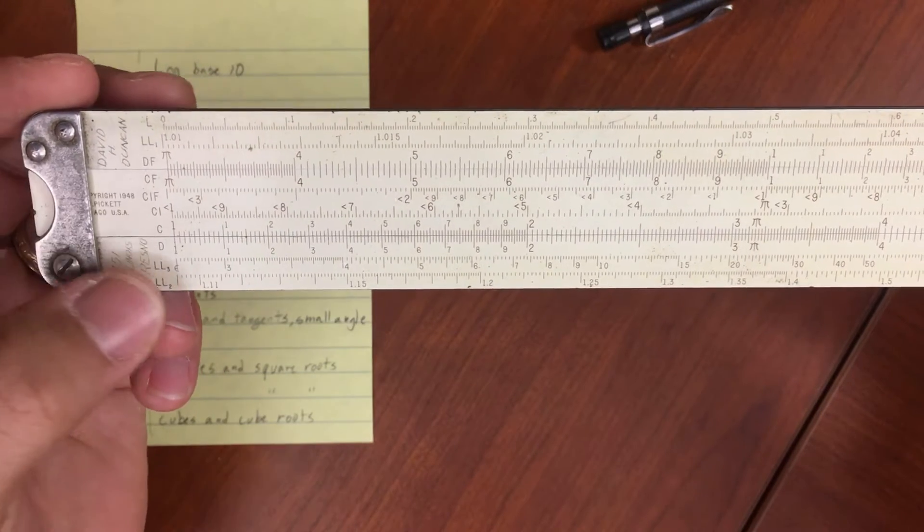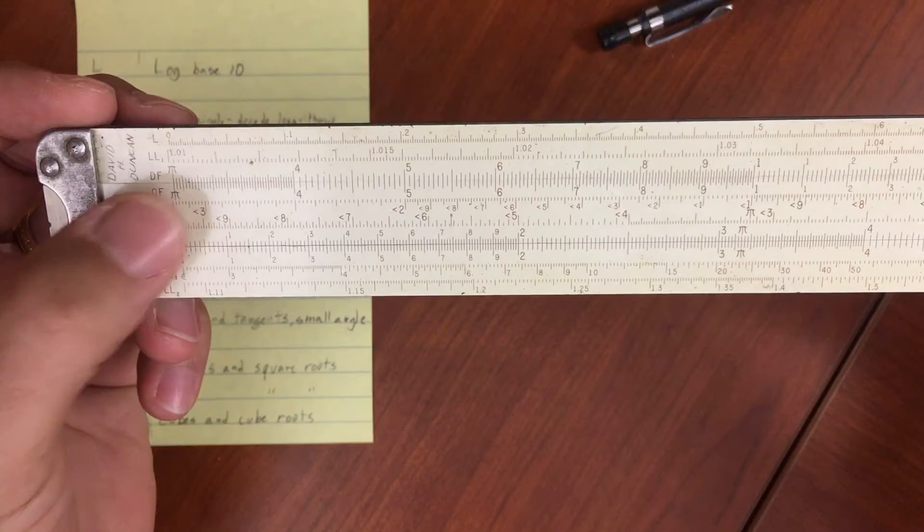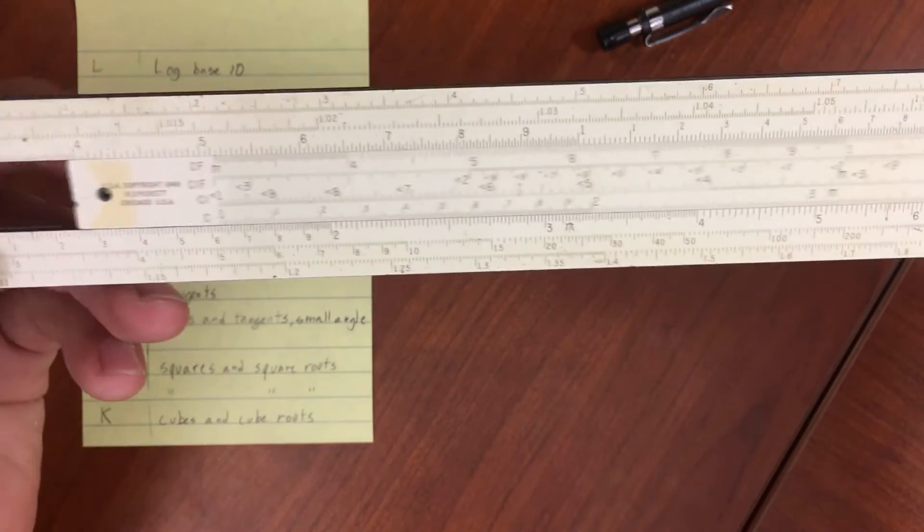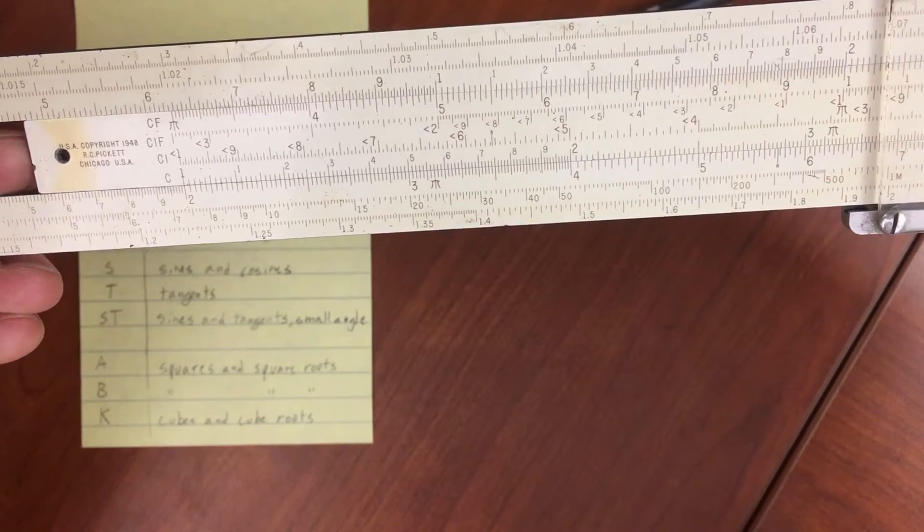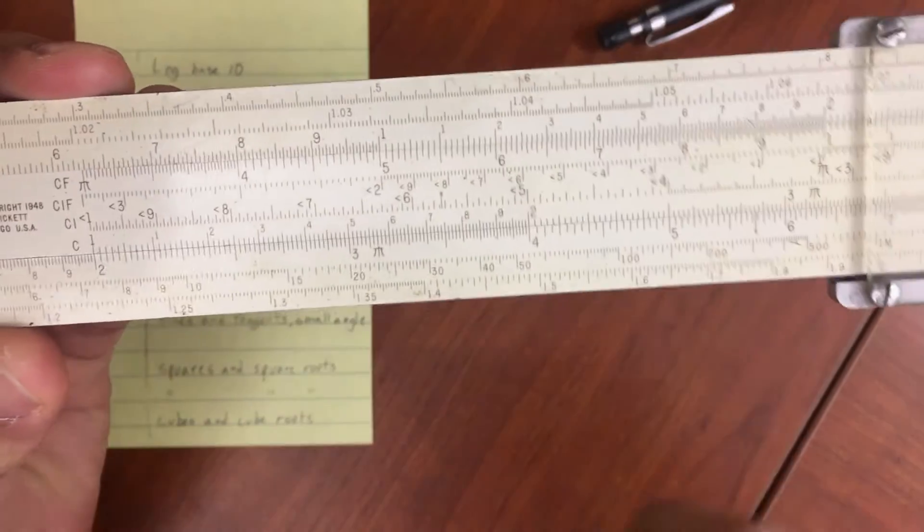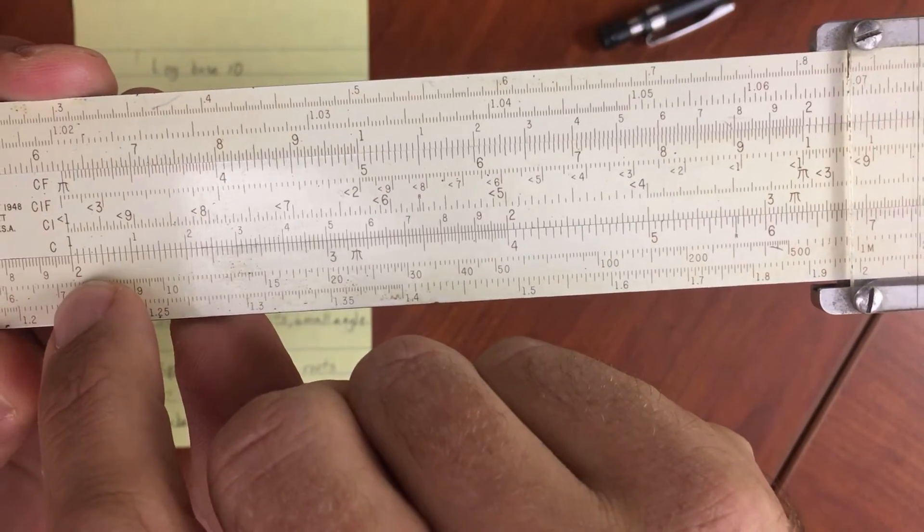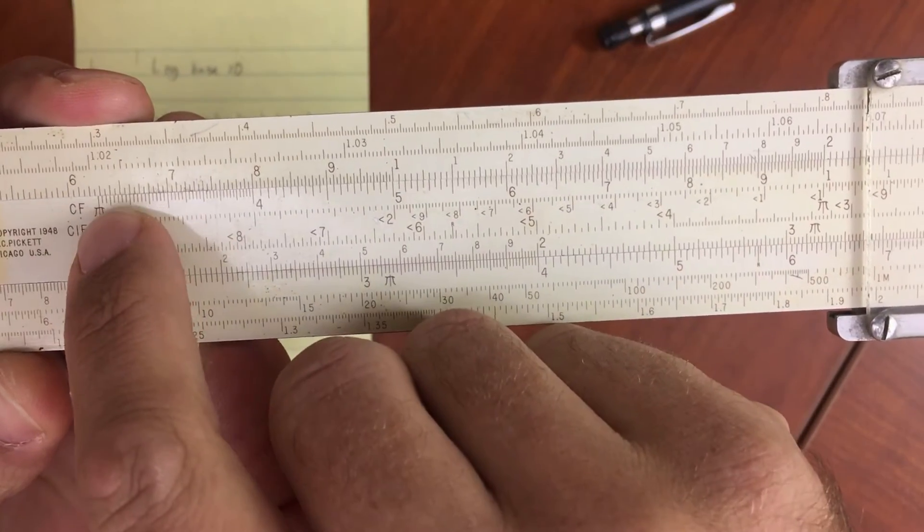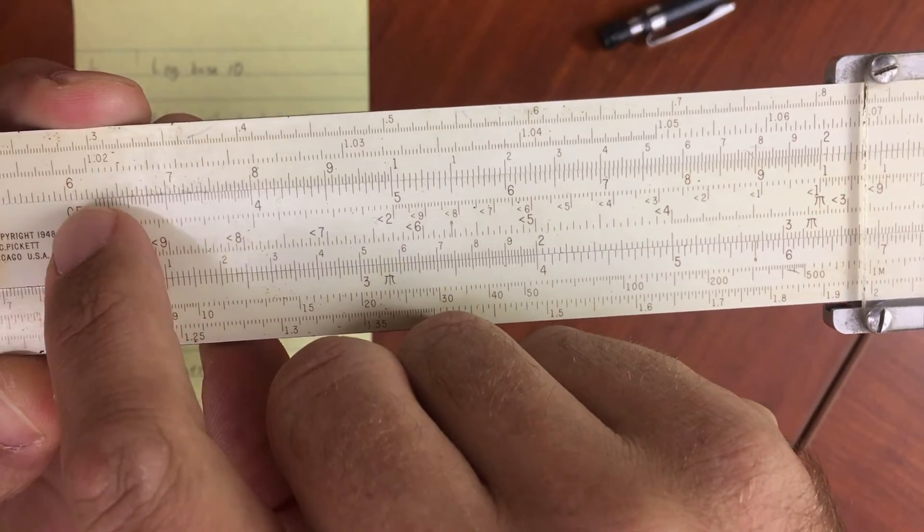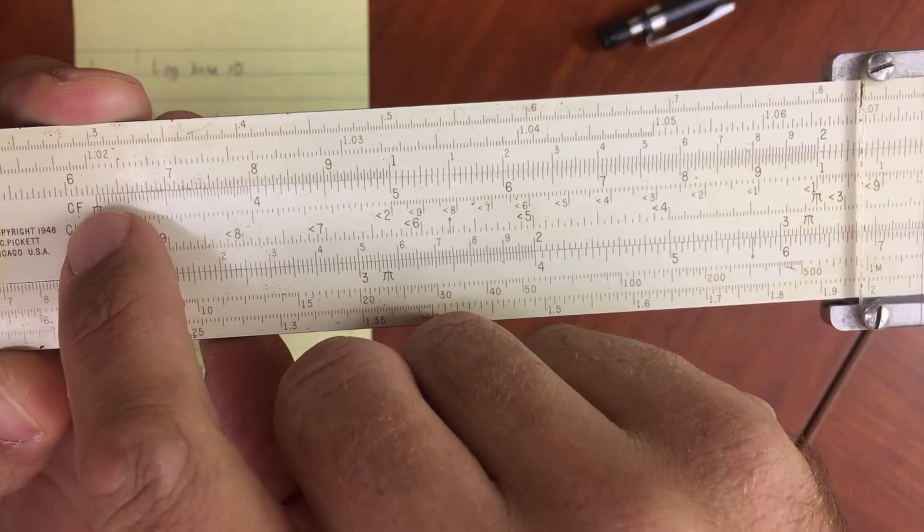So you'll see if I'm just set there right now, I have 1 times pi is pi. If I move over here, move it over to 2, and I just read off over here, I've got 2 times pi is approximately 6.128 or so.